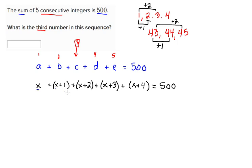So we have one, two, three, four, five x's. So we'll write down five x and we'll combine all of the other constants in here. So we have one plus two is three, plus three is six, plus four is ten. So there are five variables, five x's, plus 10 and this equals 500.